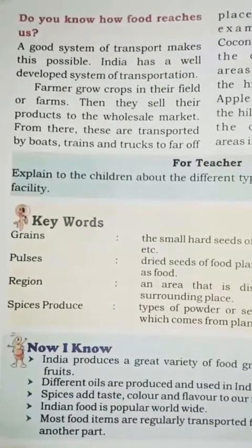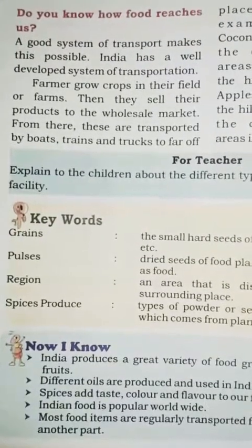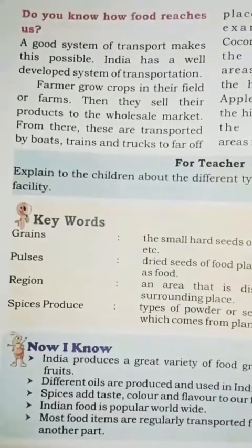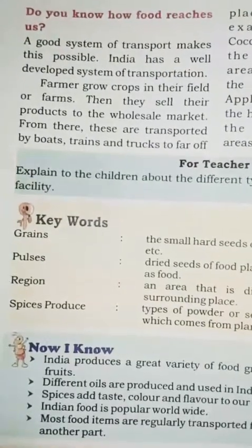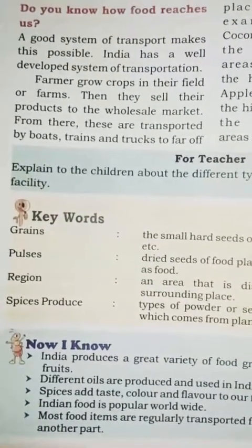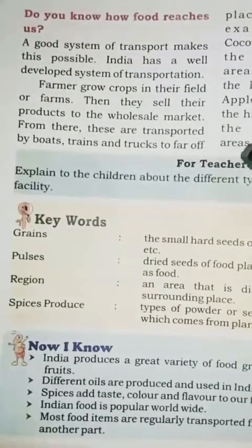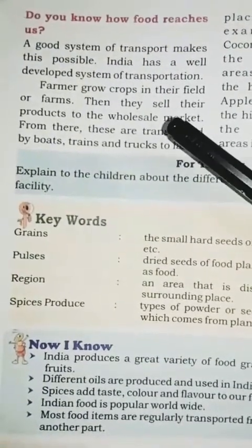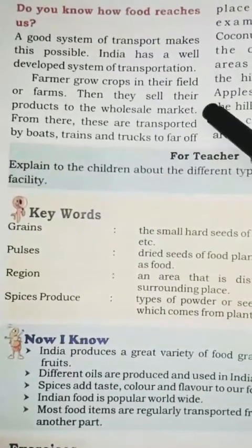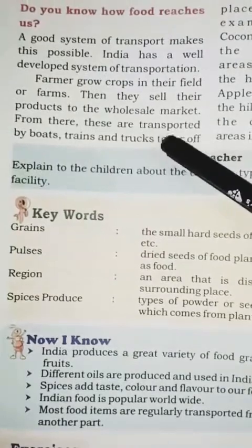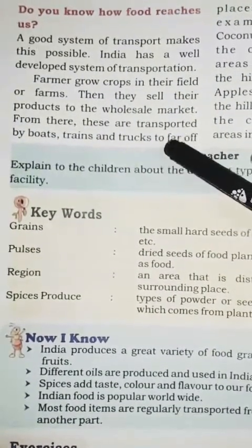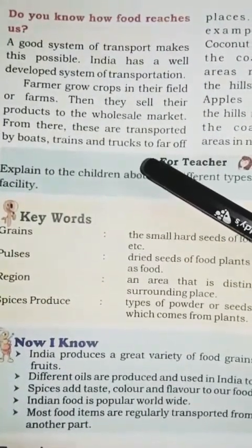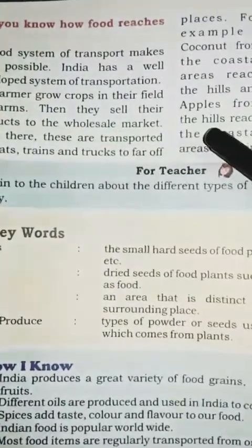Children, do you know how food reaches us? Because farmers grow their foods in different regions or areas, and it is impossible to get all types of food without transportation. It is possible only through the transportation system. A good system of transport makes this possible. India has a well-developed system of transportation. Farmers grow crops in their fields or farms, then sell their products to the wholesale market, from where these are transported by boats, trains, and trucks to far-off places.